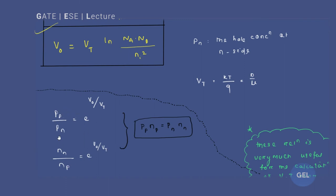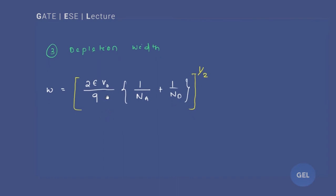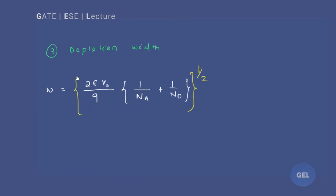So you get this kind of relationship for pp/pn and nn/np. This is also useful for engineering service exams. Now let's get into the concept of depletion width. This is a very important formula — always remember it. W is nothing but [2ε·V₀/q × (1/Na + 1/Nd)]^(1/2). Note carefully: the entire expression is raised to the power one-half — I always got confused with this and made mistakes in exams and test series. This is an extremely important formula.